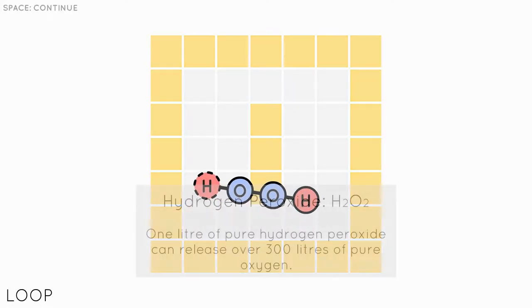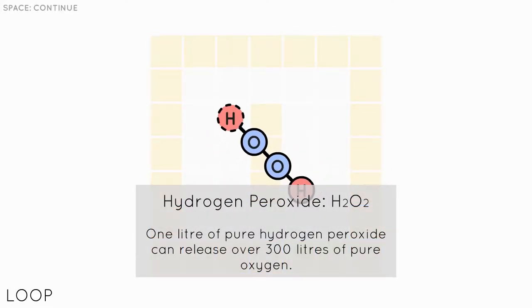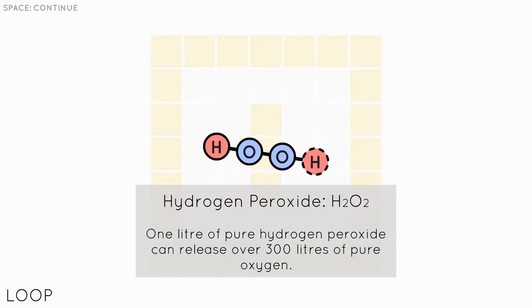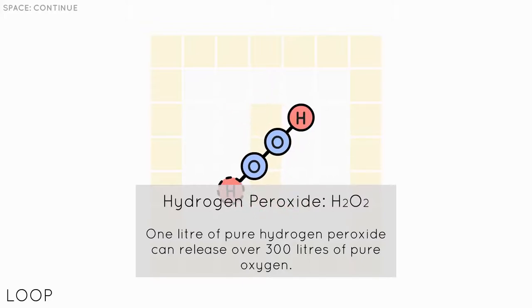You can't form a bond if there are no bond links. I tried to do the hydrogen to the other hydrogen but you can apparently push them. So hydrogen peroxide H2O2. One liter of pure hydrogen peroxide can release over 300 liters of pure oxygen. That is a lot of oxygen.